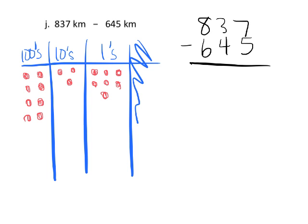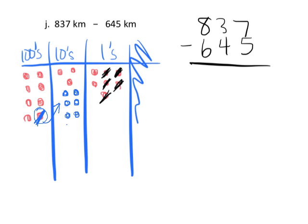We begin by crossing off 5 ones from the 7 ones: 1, 2, 3, 4, 5—straightforward. But now we have 3 tens and need to take away 4 tens, so we don't have enough. We take one of the hundreds and cash it in for 10 tens, because a hundred equals 10 tens: 1, 2, 3, 4, 5, 6, 7, 8, 9, 10. Now I have 13 tens and can take away four of them.